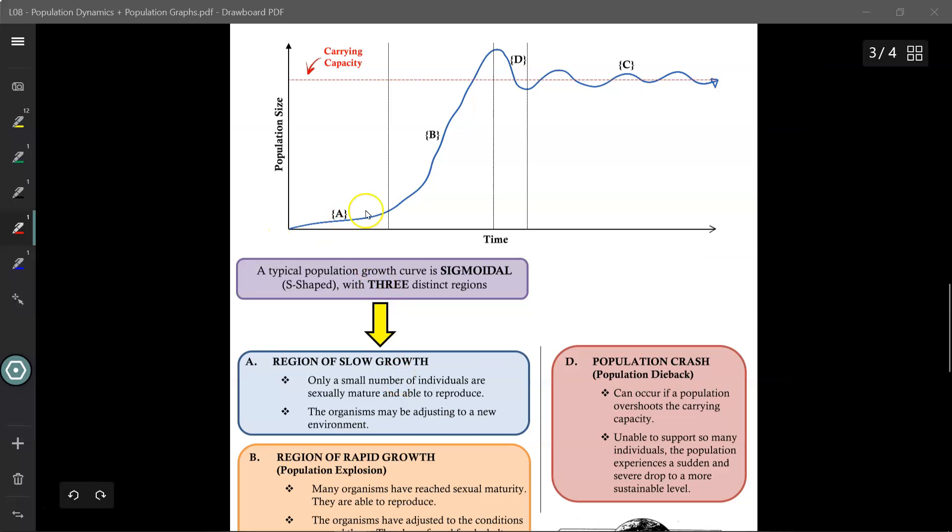Now the second major reason why the population may not be increasing quickly is that perhaps only a small number of individuals are sexually mature and able to reproduce. Once an animal is born, it does take time for it to reach puberty before it could have babies of its own.